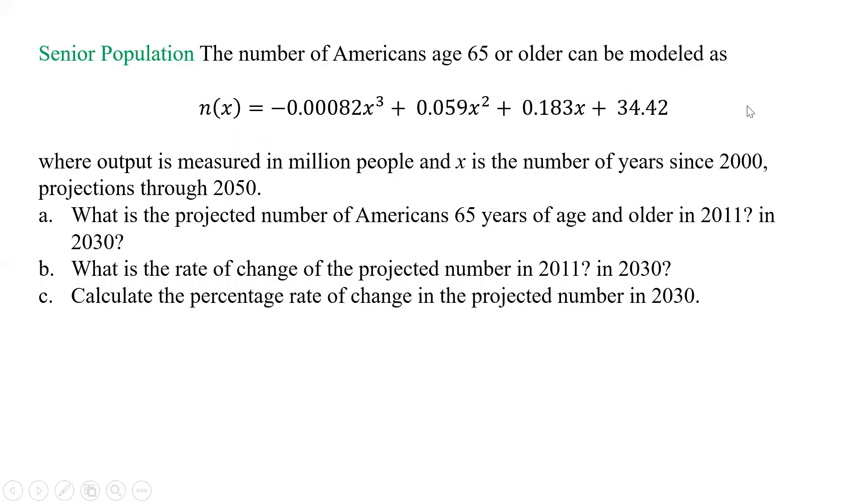All right, so here we have the senior population problem. It says the number of Americans age 65 or older can be modeled as the following function, where output is measured in million people, and x is the number of years since 2000, projections through 2050.